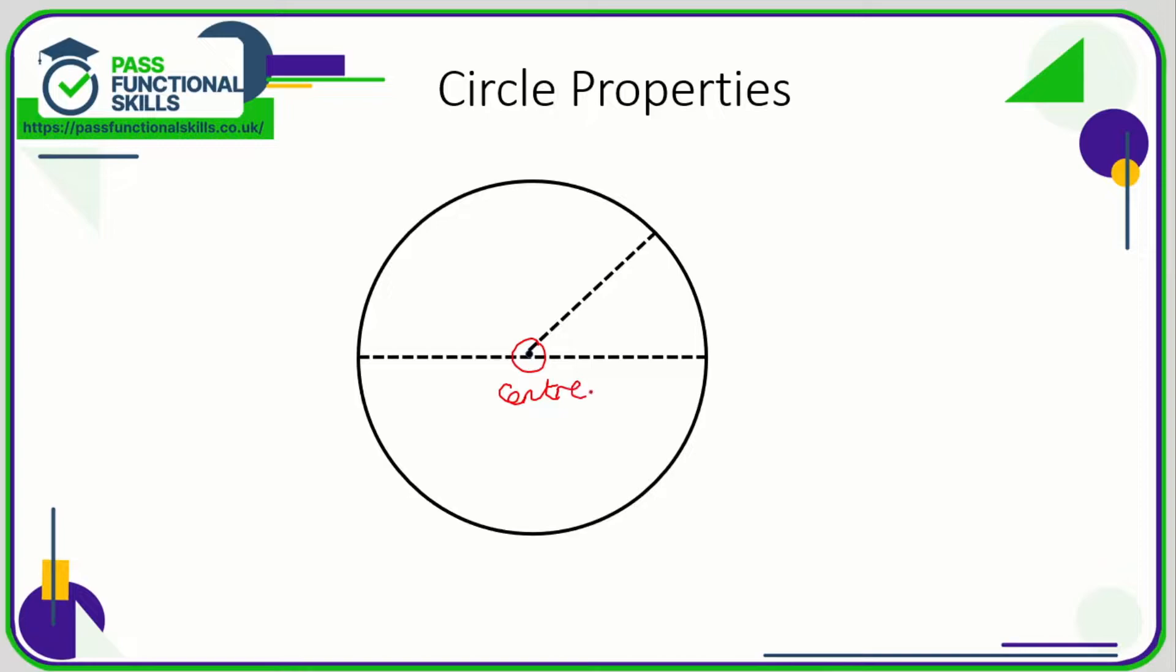The edge of a circle, the perimeter of a circle, that is called the circumference. So the distance from this point here all the way around, that is called the circumference.